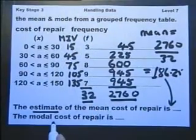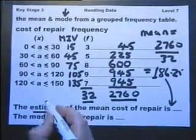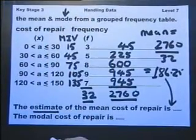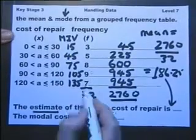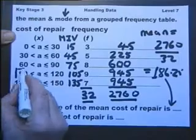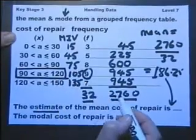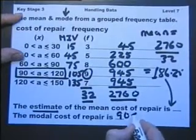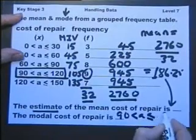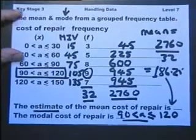Now the modal cost, mode being the most popular and modal meaning the same thing, is the bill that was most frequent. Well all we can do is give the group. And this is the group where in fact there were nine bills, and that is more than any other group. Therefore the mode or modal is the group where the most bills appeared, which is 90 to 120 pounds.